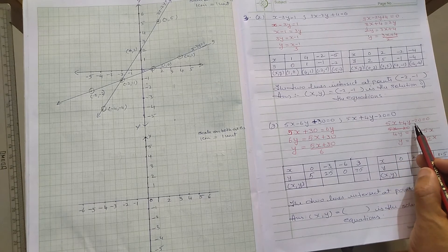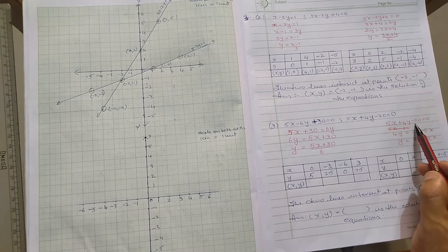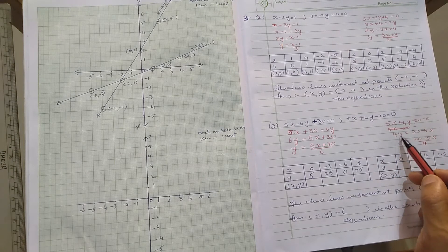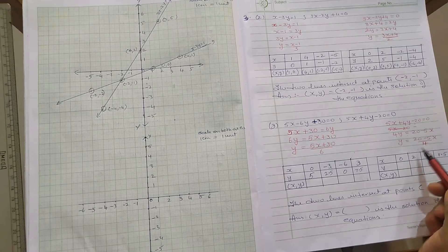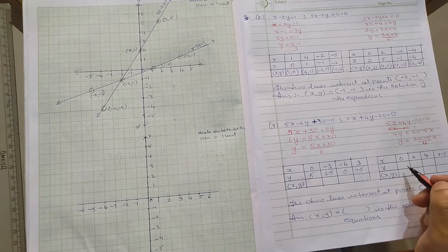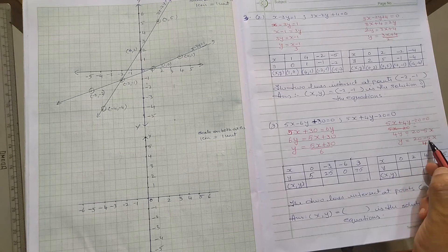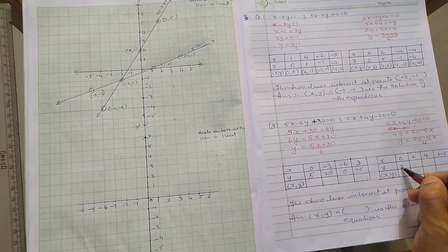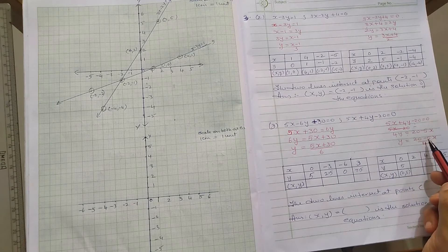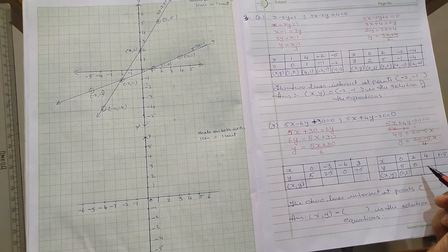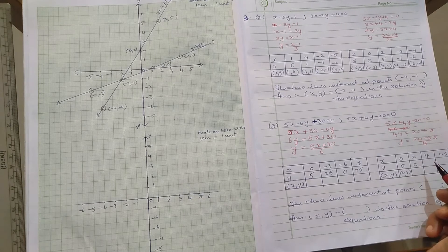When you put x equal to minus 6, you will get 0. When you put x equal to 3, you will get 7.5. For the second equation, 5x plus 4y minus 20 is equal to 0. Take 5x and minus 20 to the right-hand side, so 4y is equal to 20 minus 5x, giving y is equal to 20 minus 5x upon 4. When x is equal to 0: 20 divided by 4, you will get 5.